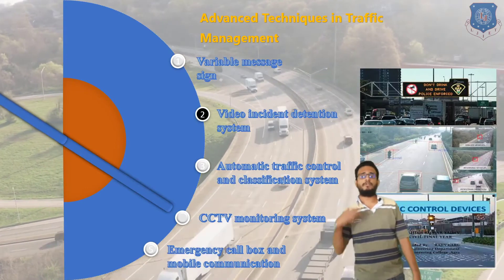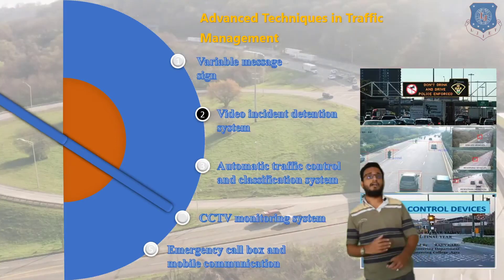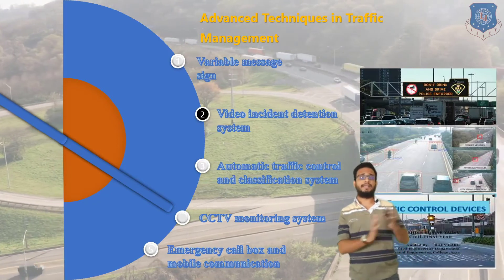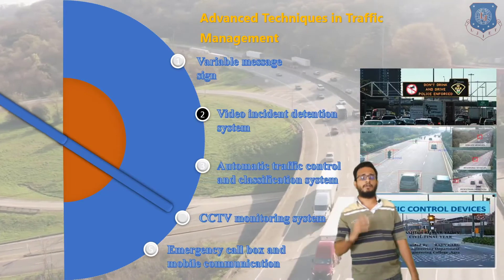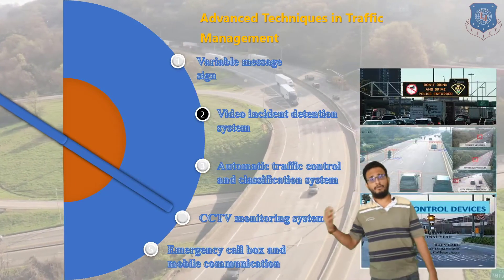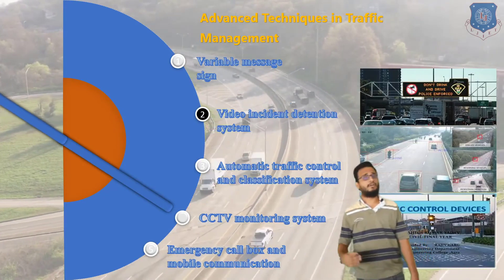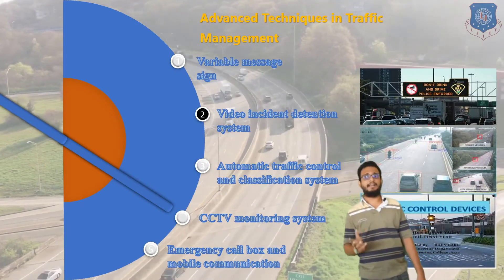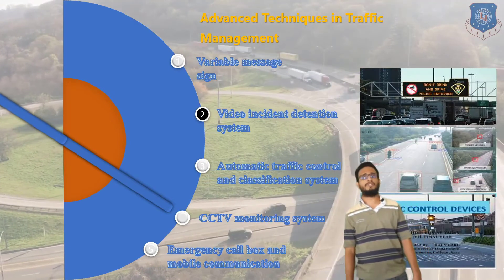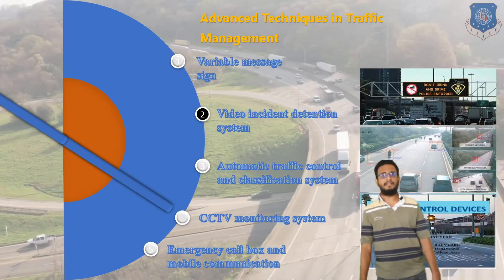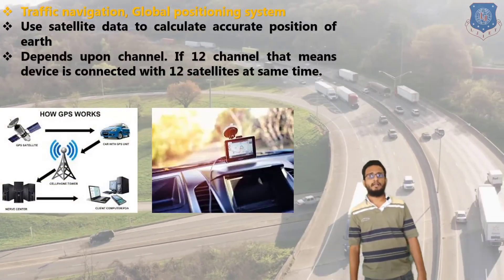Variable message signs indicate stop, slow down, turning, heavy traffic issues, and also pollution index — so you can know whether the atmospheric environment is suitable or not. Video incident detection systems help in accidental cases and traffic control. CCTV monitoring and emergency call boxes guide and drive the proper functioning of transportation systems. These are the basic advanced traffic management systems.